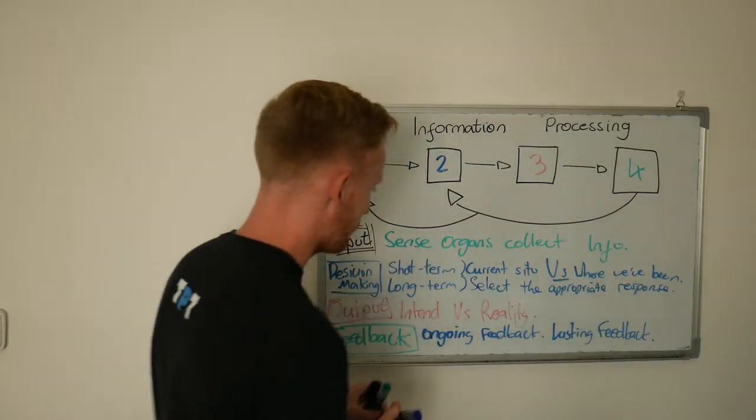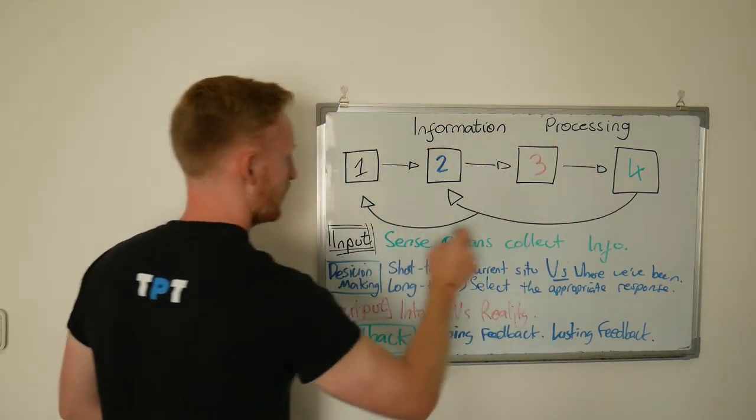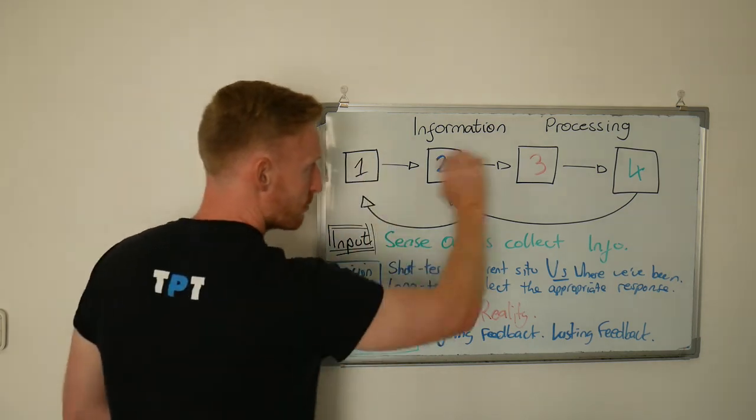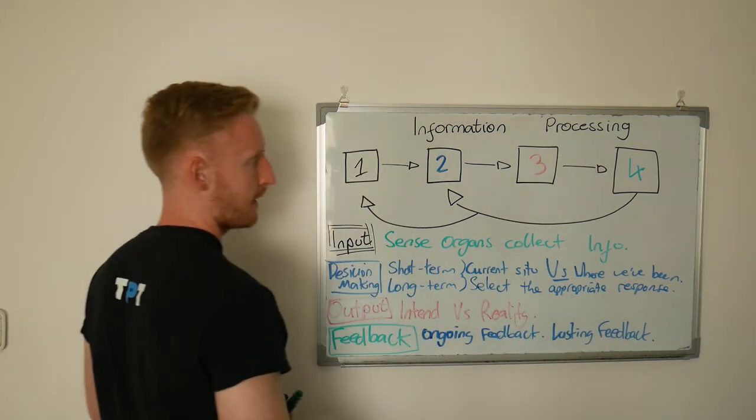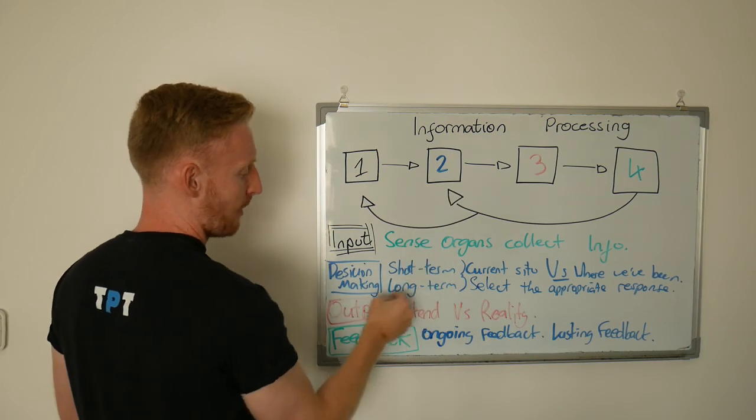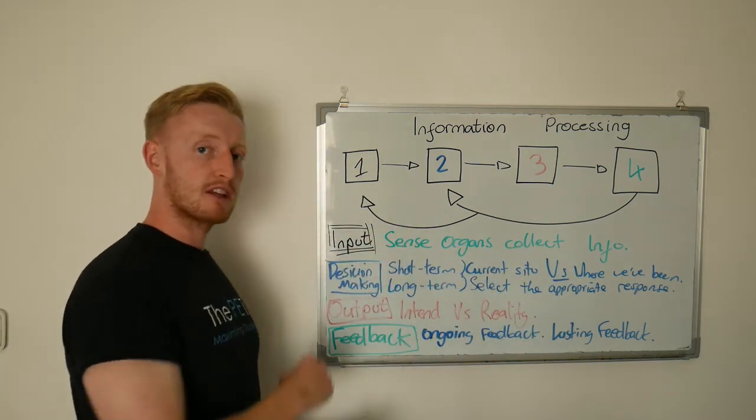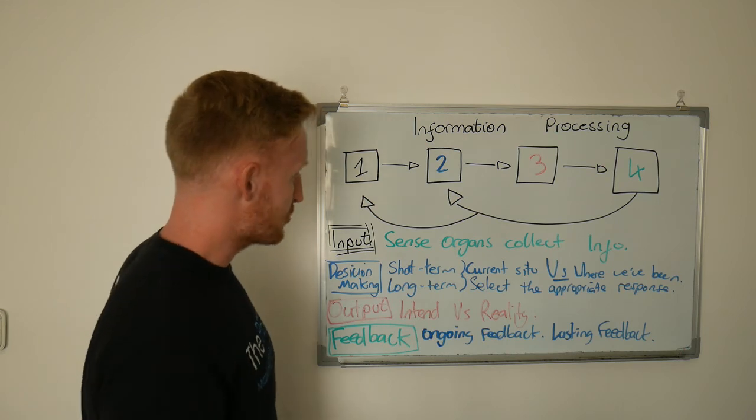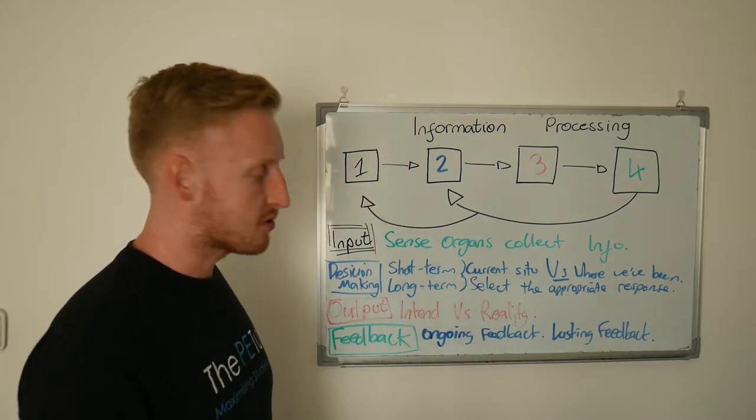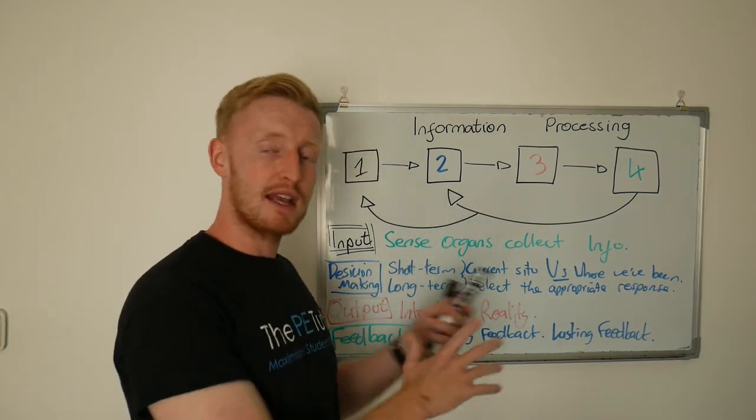The ongoing feedback is what I was just talking about there. It comes back and it changes every single split second. We run this loop, and as we produce an output, we collect the new information that's produced because of it and we go through this same system. But the lasting feedback—once the output is finished, we can then consolidate that and add it into our longer term memory bank. So the next time a tennis ball flies towards us, we can use that recent experience as a possible solution.